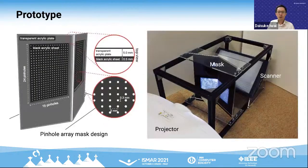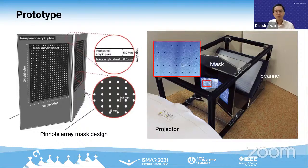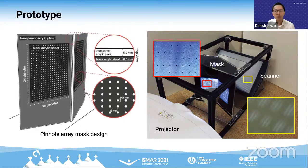Our calibration process consists of three steps: first, we project structured light patterns from the projector to the calibration device; then we extract the chief ray pixel from each blob on the scanner surface; finally we calibrate the projector using the 2D chief ray pixel coordinate on the projector's imaging plane and the 3D coordinate of the pinhole through which the chief ray passes, and the 3D coordinate of the chief ray pixel on the scanner surface. We built a prototype using two pinhole array masks.